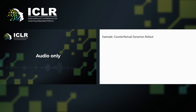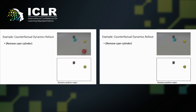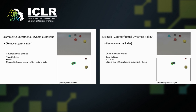Let's look at an example of how NSDR performs counterfactual reasoning. Here, the upper window shows the input video and the lower window shows the predicted trajectory when the cyan cylinder is removed. Our model is able to capture the counterfactual event without direct observation and answer the question correctly.